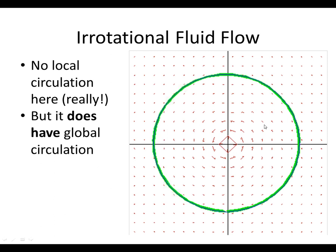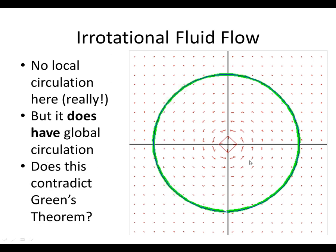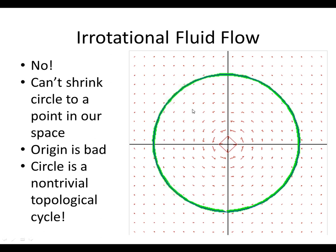The main point is that all these calculations of swirliness and circulation are calculus calculations — about direction, flow, movement, and change — but they're deeply affected by topology. Taking just one point out of the plane to make this vector field legal is a drastic topological effect. The simplest way that shows up: this circle was topologically trivial if I had the whole plane. As soon as I pluck out the origin, I can't deform this circle back to nothing, so it's not trivial anymore. That's why this doesn't contradict Green's theorem — the circle is a non-trivial topological cycle in the plane minus the origin.